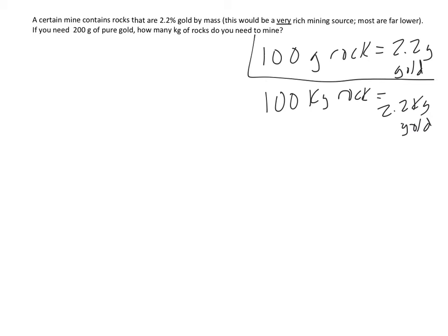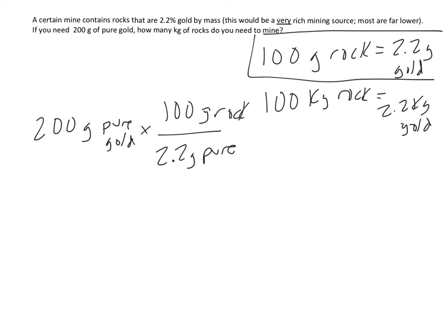So it says, I want 200 grams of pure gold. So 200 grams of pure gold. And I want to figure out how much rock I would need to mine. So if I know that in order to get 2.2 grams of pure gold, I need 100 grams of rock, this is how I use my percent as a conversion once again.